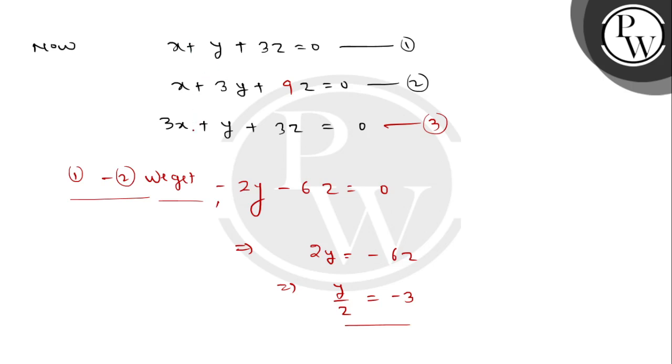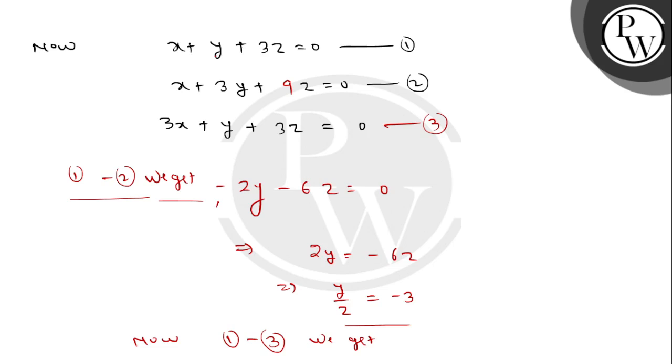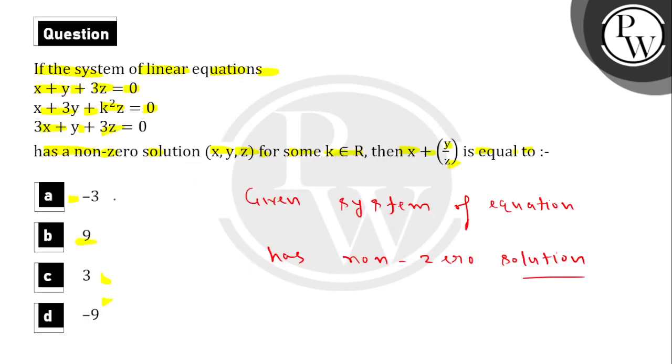Equation 1 minus equation 3. x plus y upon z is equal to minus 3. The answer is minus 3. Option A matches. Option A is the correct answer. Hope you understood.